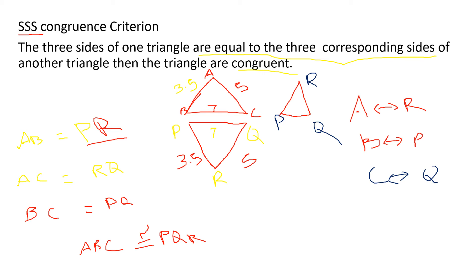Just keep in mind: SSS means the two triangles will have all three sides equal in measurement, and all the angles will also be equal. Mainly the three sides will be equal - if the sides are equal then the angles are also equal. This is the first congruence rule: the SSS triangle.